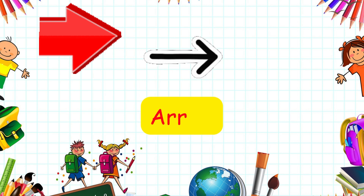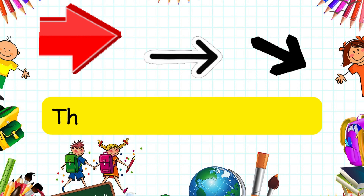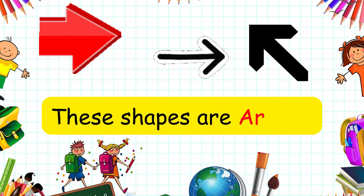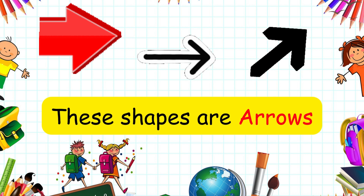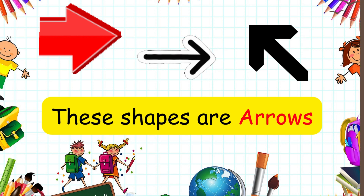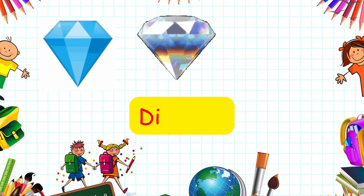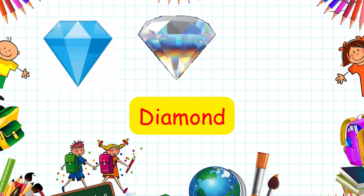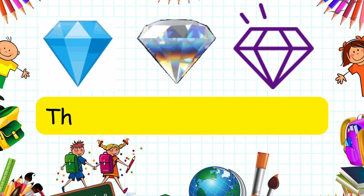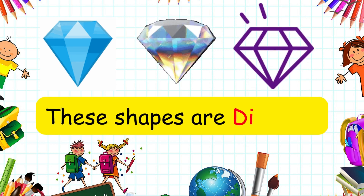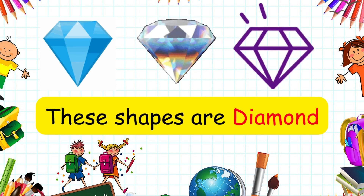Arrow — these shapes are arrows. Diamond — these shapes are diamonds.